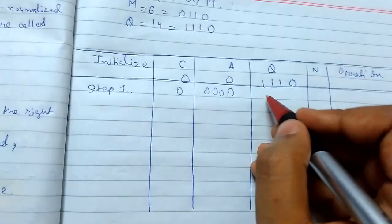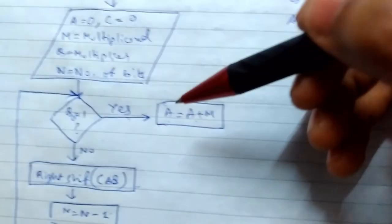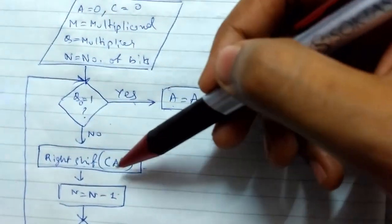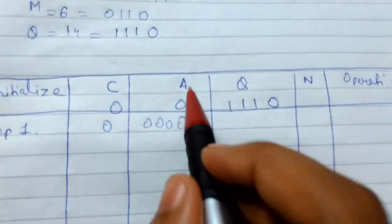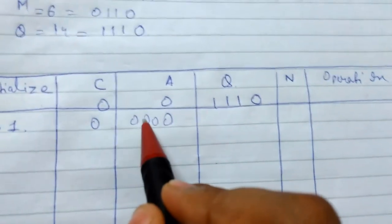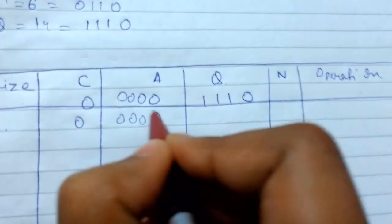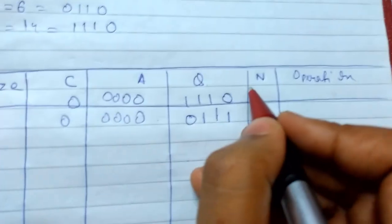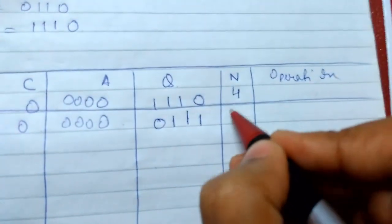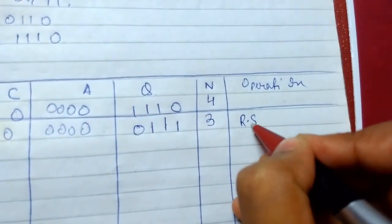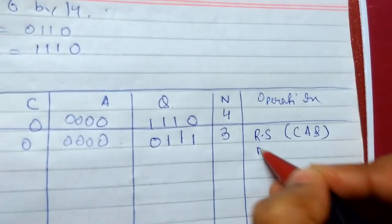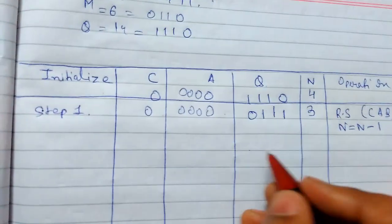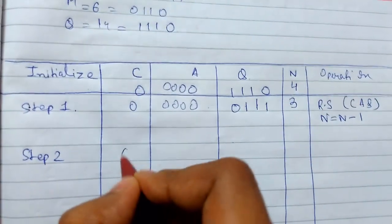Step 1: C and A are 0. Q0 is 0, so we right shift C, A, Q. The order of right shift is C, A, Q — a 0 shifts in from C, and all bits shift right. A remains 0000, and N goes from 4 to 3. Operation: right shift (RS) in order C A Q, and N = N - 1.